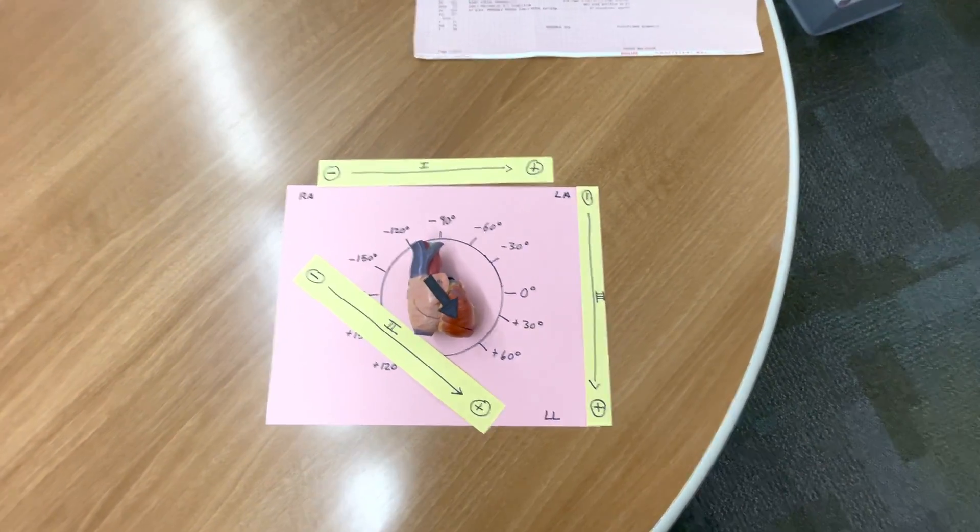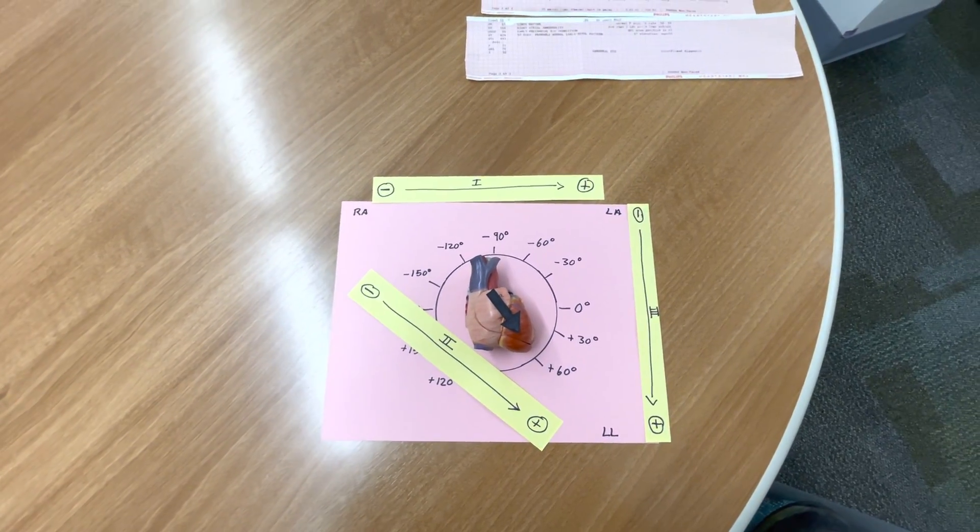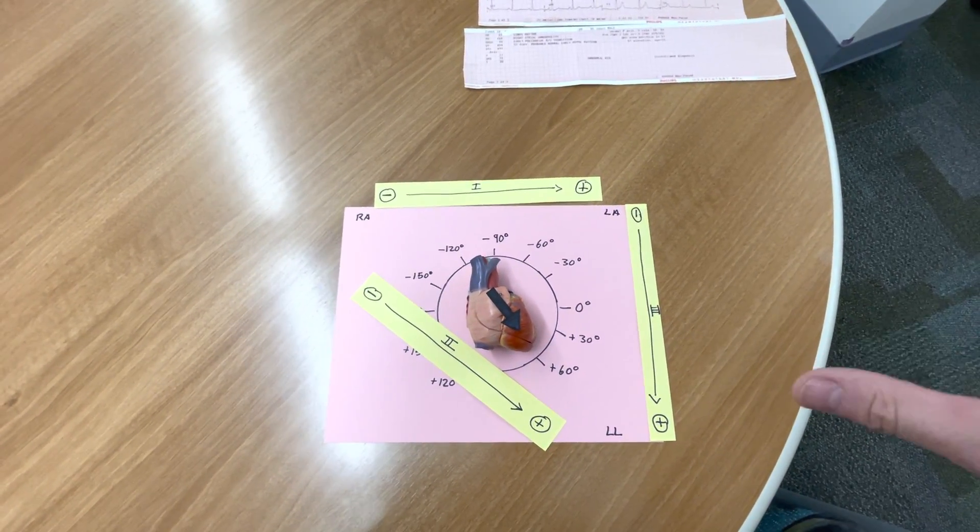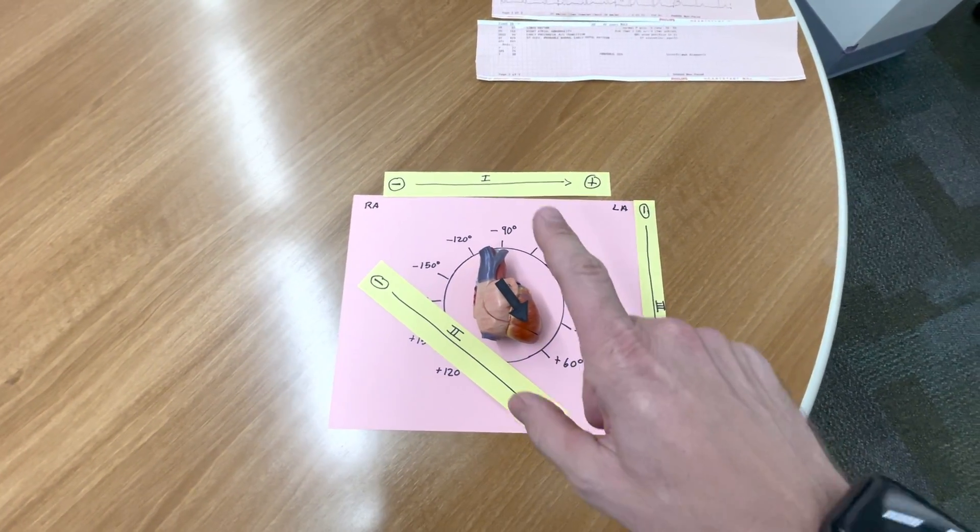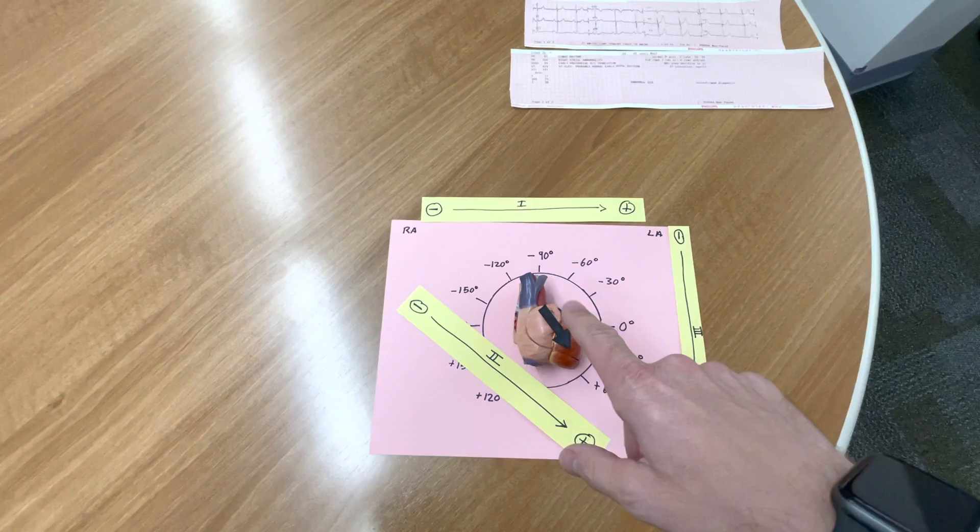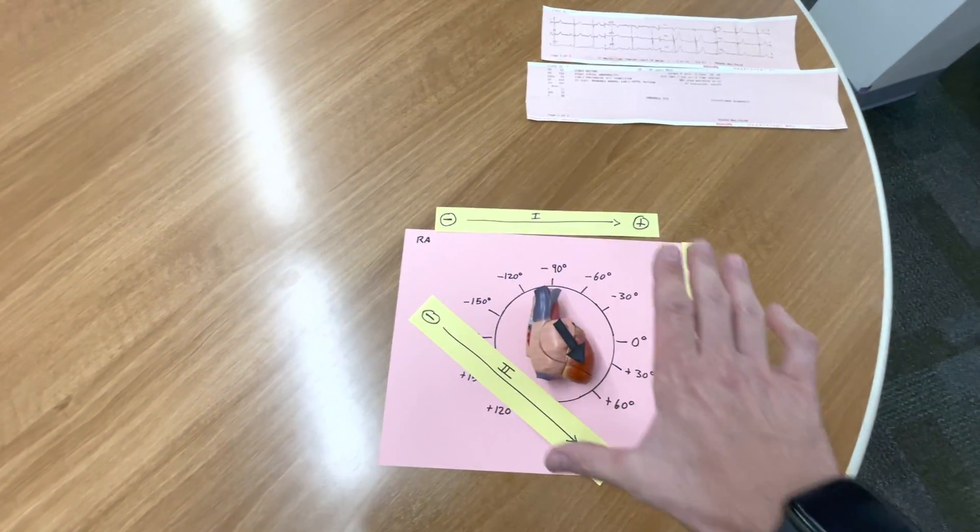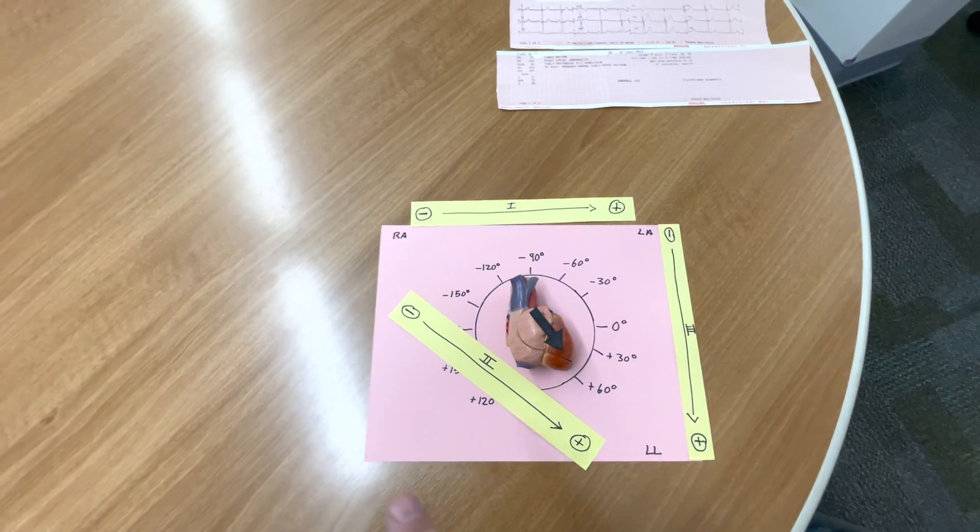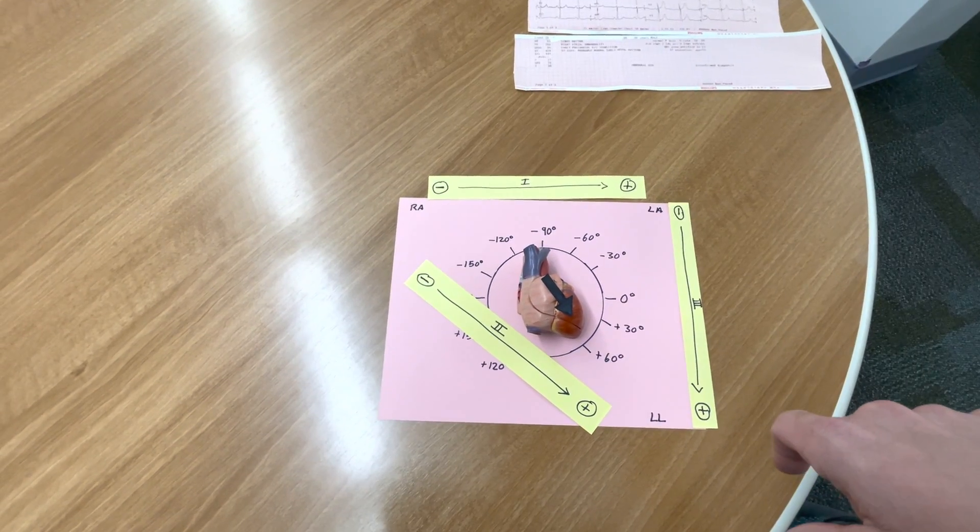Remember, the limb leads are bipolar, so you can look at them through multiple directions. A quick, easy way to determine if the axis is normal on a person is, if you look at the limb leads 1, 2, and 3, the electrical activity is more or less moving toward the positive electrodes in all three leads. The electrical activity is more or less moving in this direction, more or less moving toward the positive.